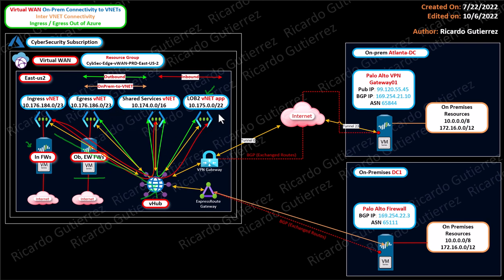Now, if your VM instance wants to talk to an on-prem server, the packet is sent to the virtual hub, and then the virtual hub has a route either to the ExpressRoute or through the VPN gateway. On your firewalls, you will want to set the ExpressRoute as a preferred route via BGP.